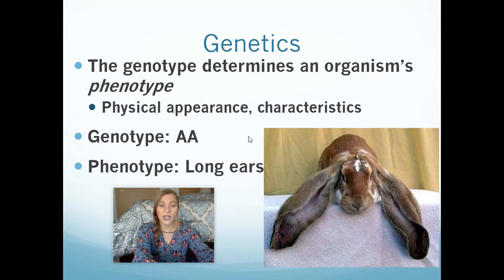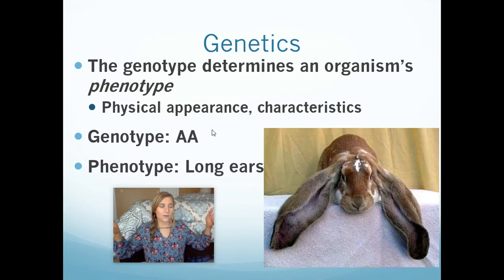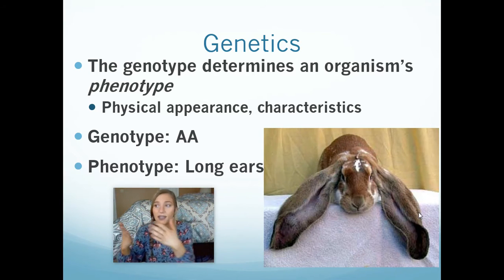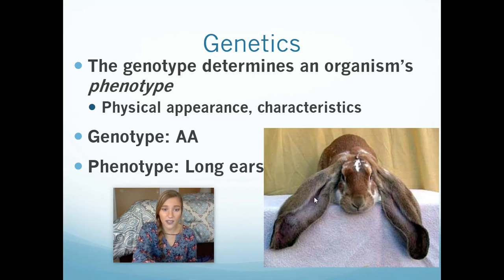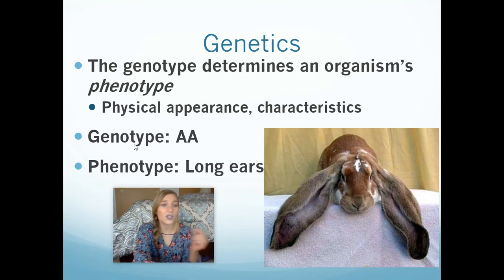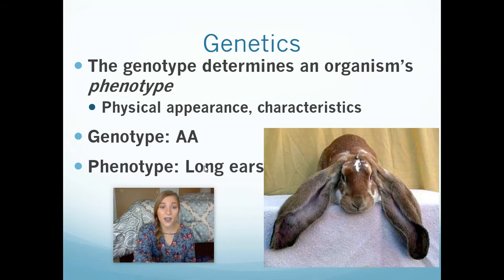So if this bunny's genotype is big A, big A — it has two dominant alleles for the ear-length gene — its phenotype would be what traits do we see? What are the observable physical characteristics that this organism has because of those genes? This bunny has super long ears. Why? Because of its genes. So phenotype is physical appearance; genotype is genes. In this example, we're imagining that long ears are dominant, and because it's homozygous dominant, this bunny is going to have long ears.